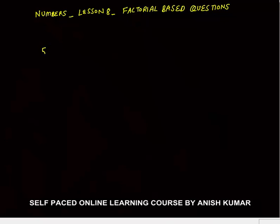Hello, this is Numbers lesson 8. In this I will discuss factorial-based questions. First of all, what is the meaning of factorial? When I say 5 factorial, this is equal to 5 into 4 into 3 into 2 into 1.